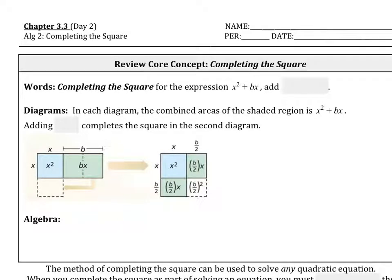Section 3.3, Day 2 — we're actually completing the square. To complete the square for expressions like x squared plus bx, we're going to add the perfect number. What we do is we divide b in half and then we square it.